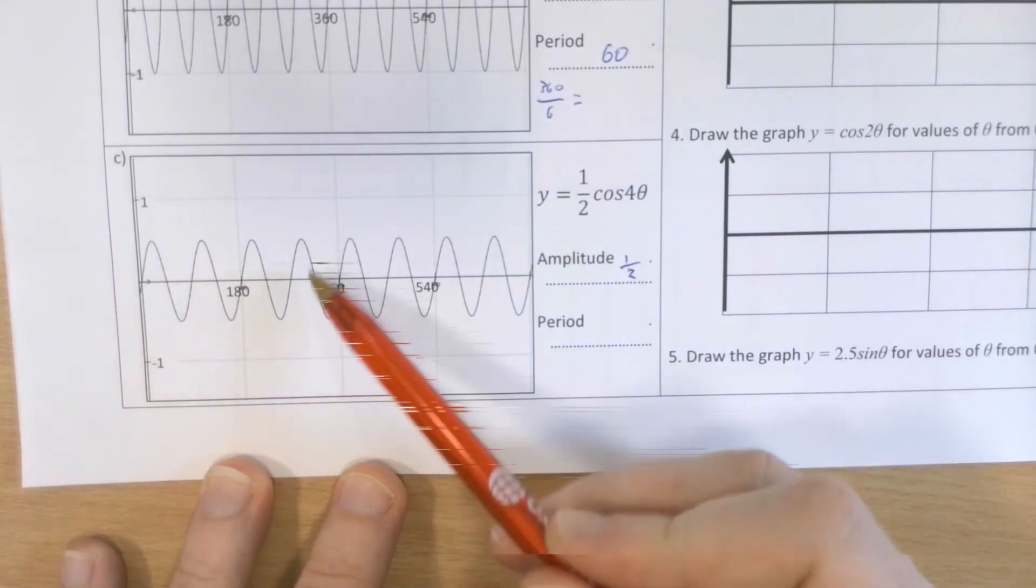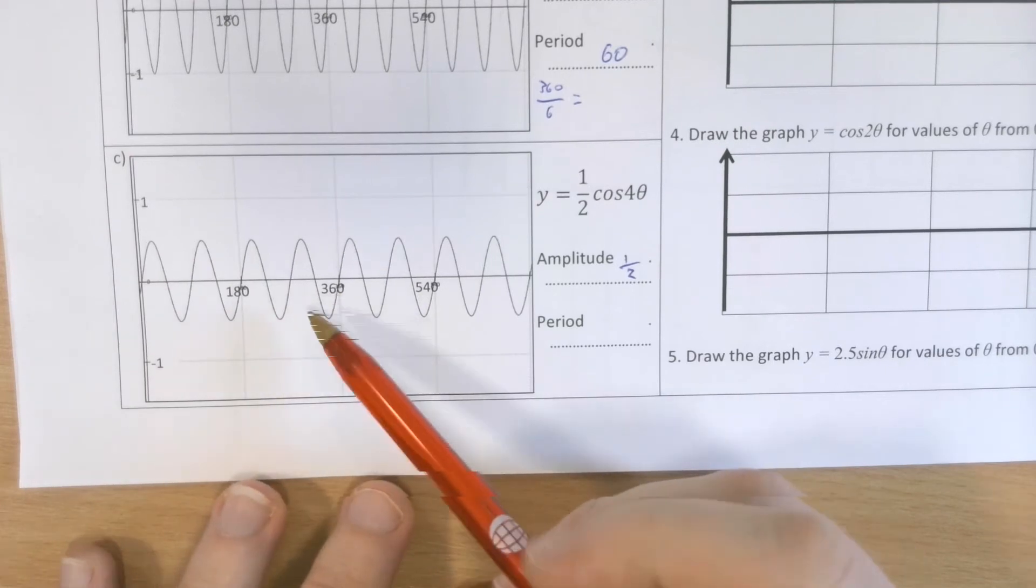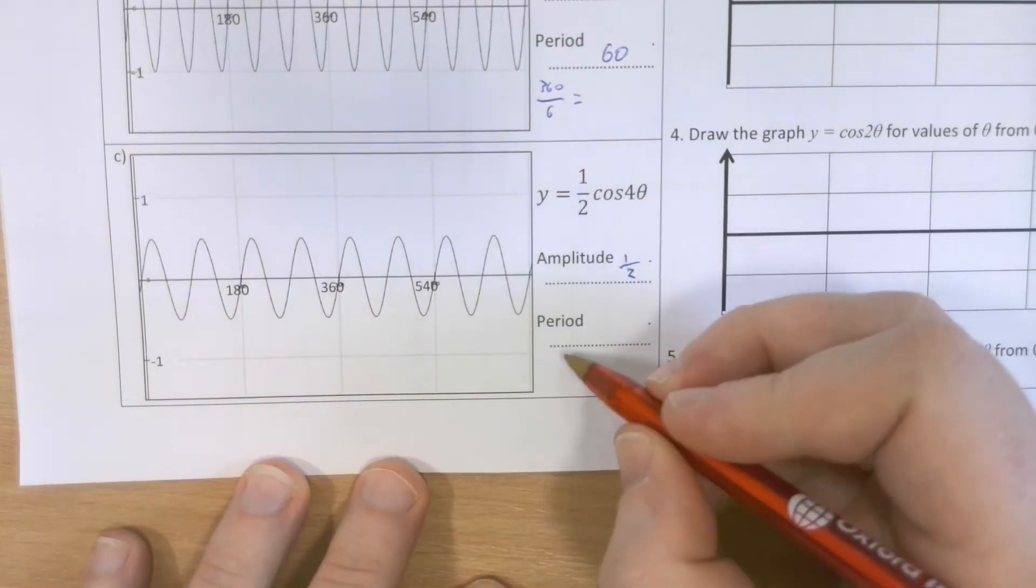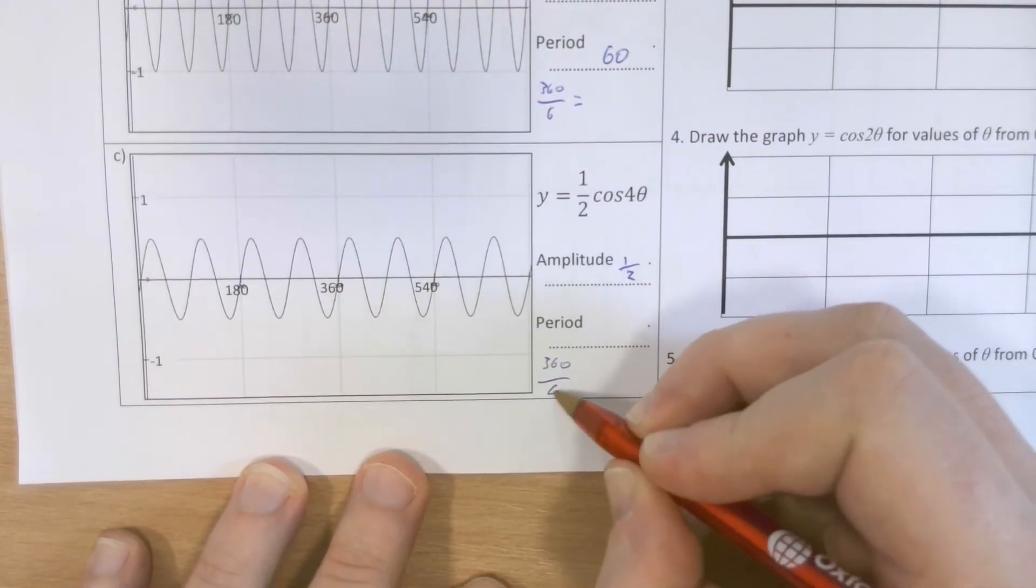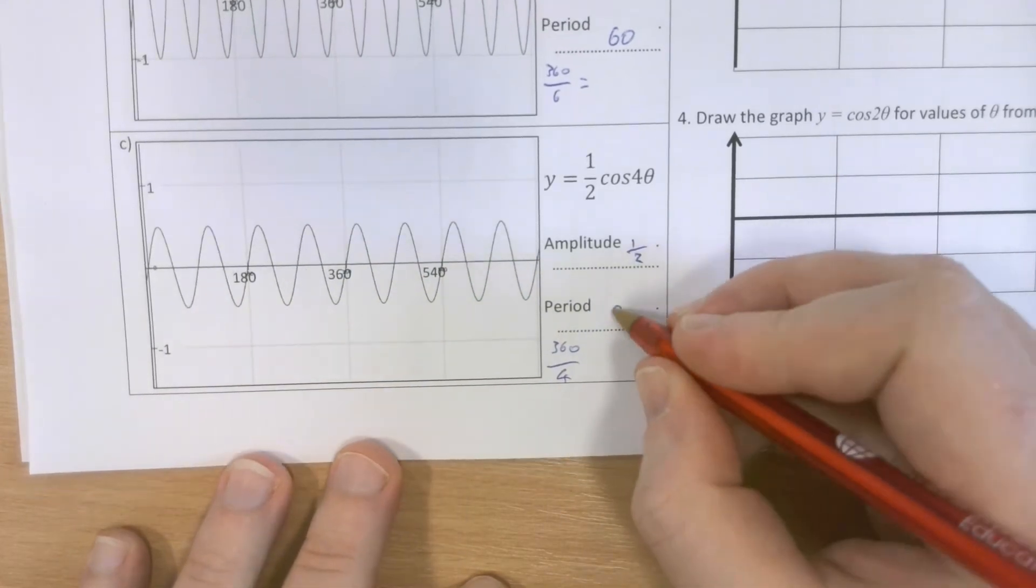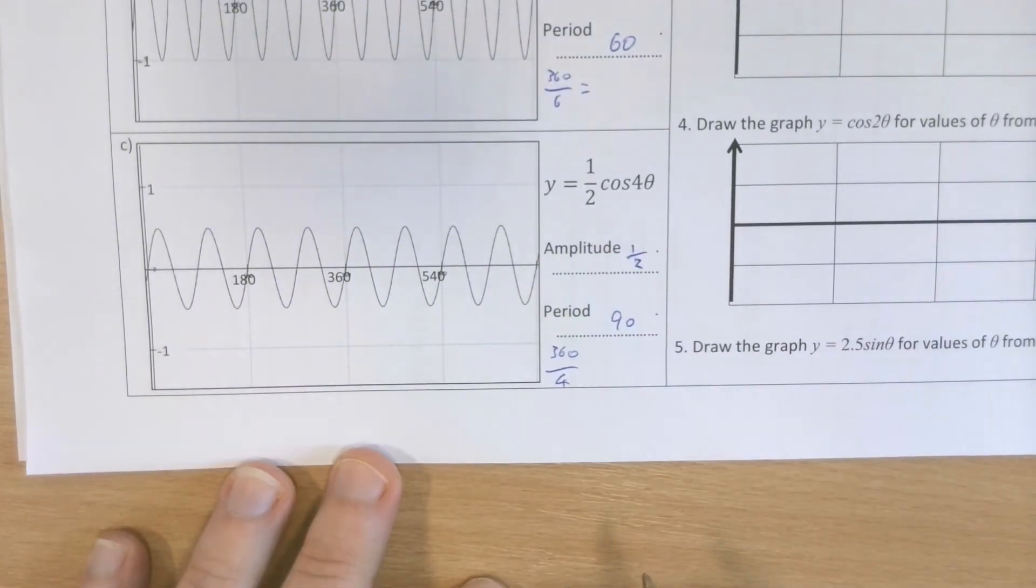3, 4 repetitions of the pattern between 0 and 360. Or you can just take that number, 4. 360 divided by 4 is the answer. So that's 90.